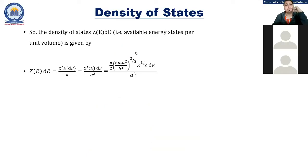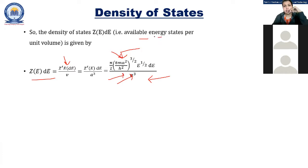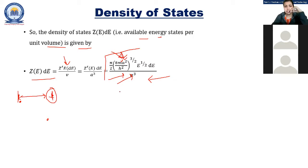We were discussing the density of states and the final equation for Z(E)/V, where 'a' was getting cancelled. Many students had doubts about this — in the Schrödinger equation for sound waves, 'a' is for acceleration, but for electron potential, 'a' is actually the interatomic distance — the distance between atoms through which the free electron is moving.